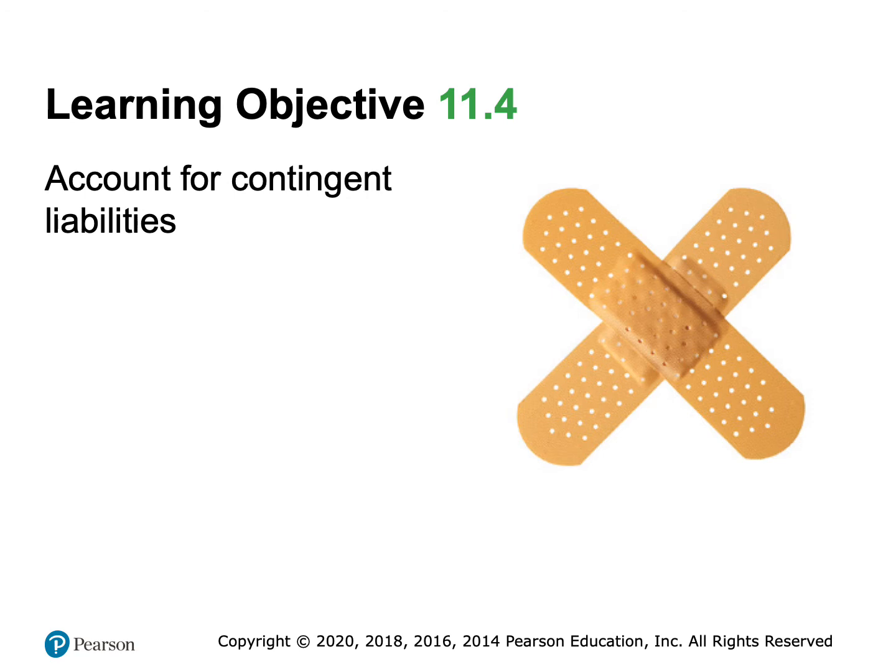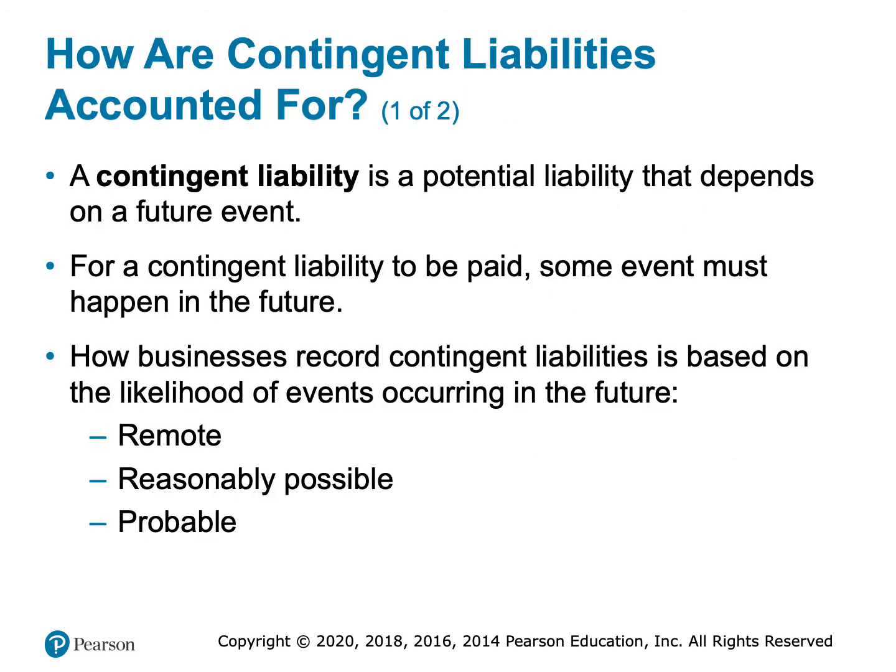There's a special category of liabilities called contingent liabilities. A contingent liability is a liability that might exist — it doesn't exist yet, but there's a good possibility that it will exist if some event happens that is somewhat likely. How we deal with that liability depends on the likelihood of it happening. The best example of a contingent liability is being sued. We know that there's a possibility that we may lose, we don't know how much, but we'll have to decide what to do based on the likelihood that our lawyers and experts think we'll lose.